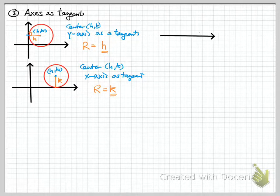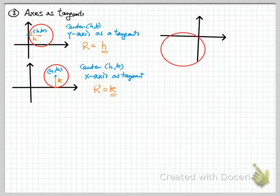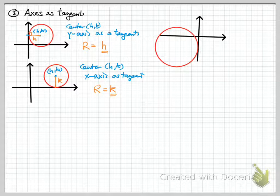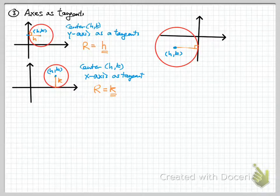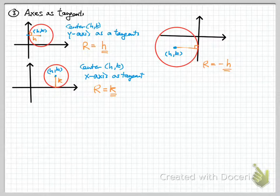If the circle is not in the first quadrant, you have to improvise on the sign. For example, if it is in the second quadrant with center (h, k) where h is negative and the y-axis is the tangent, then the radius will be -h. You have to adjust the plus and minus sign of h accordingly.